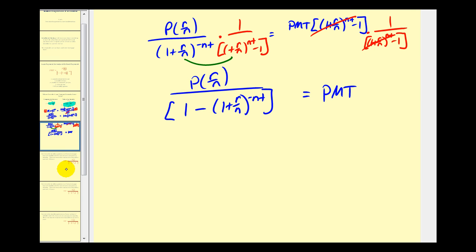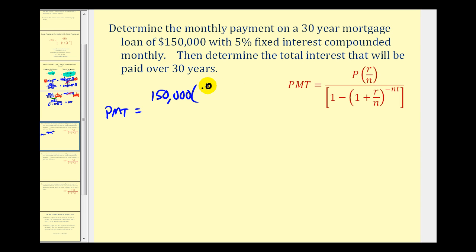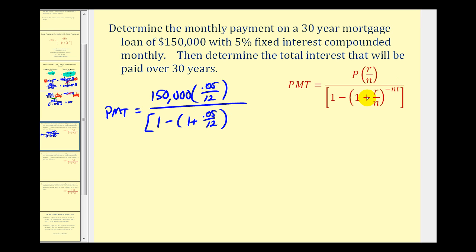Let's take a look at our examples. Determine the monthly payment for a 30-year mortgage loan of $150,000 with a 5% fixed interest compounded monthly, and then determine the total interest paid over 30 years. Our monthly payment equals P times R divided by N — that's 0.05 divided by 12, since it's compounded monthly — all divided by one minus one plus R over N to the negative N times T power, where N is 12 and T is 30, giving an exponent of negative 360.